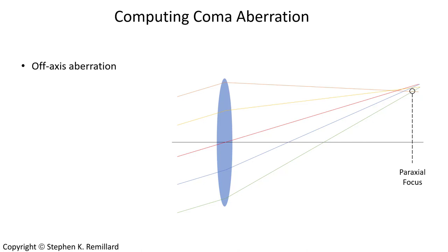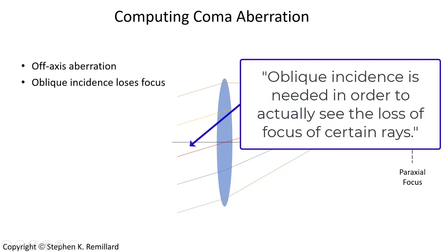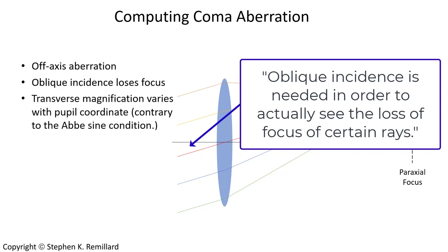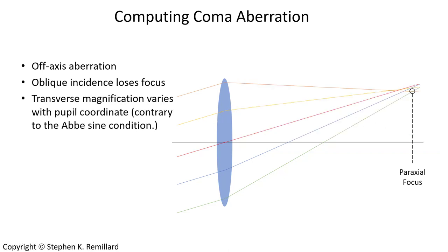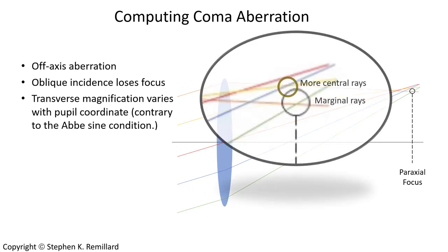In this video you will gain an understanding of coma aberration, develop an ability to envision where the rays are going, and see a sample calculation so that you can do your own calculations. Coma is an off-axis aberration, which means oblique incidence is needed to see the loss of focus of certain rays. It is a consequence of a variation of transverse magnification as the location on the entrance pupil varies, contrary to the Abbe sine condition.